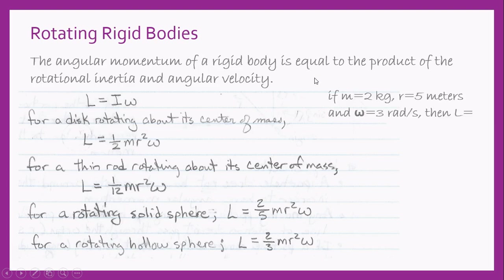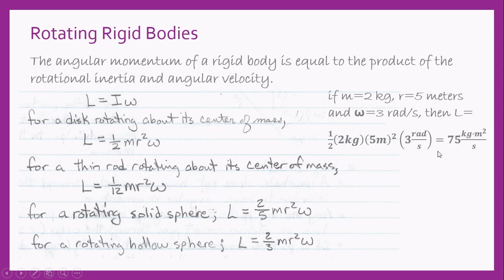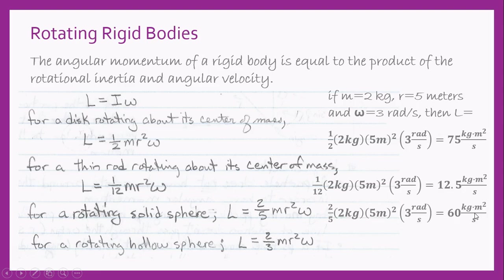Let's do some calculations. In all instances the mass of the rigid body is two kilograms, its distance from the origin — the axis of rotation — is five meters, and its angular velocity is three radians per second. For the rotating disk, the angular momentum is 75 kilogram meters squared per second. For the thin rod, it's 12.5. For the rotating solid sphere, it's 60. And for the rotating hollow sphere, it's 100 kilogram meters squared per second.